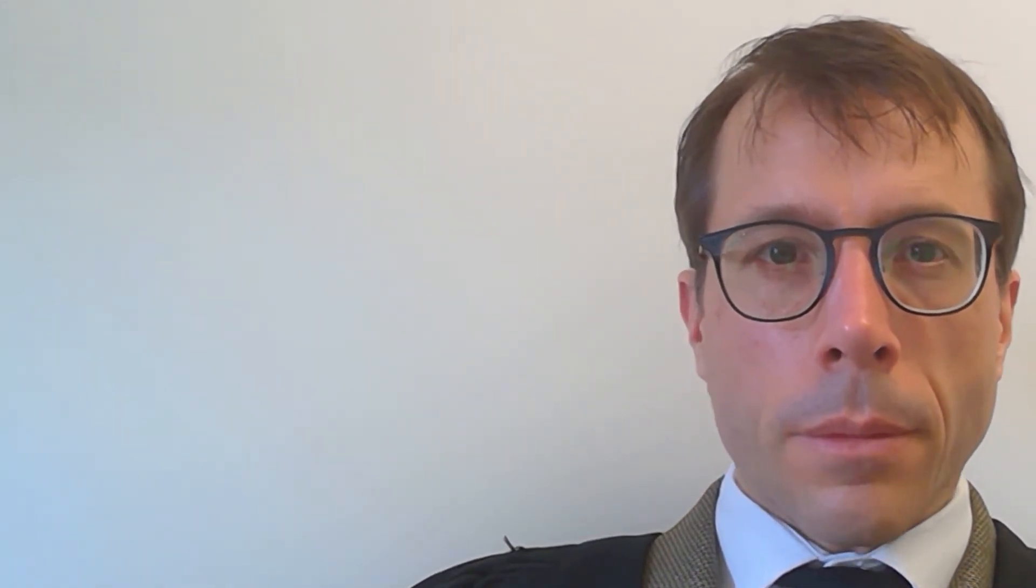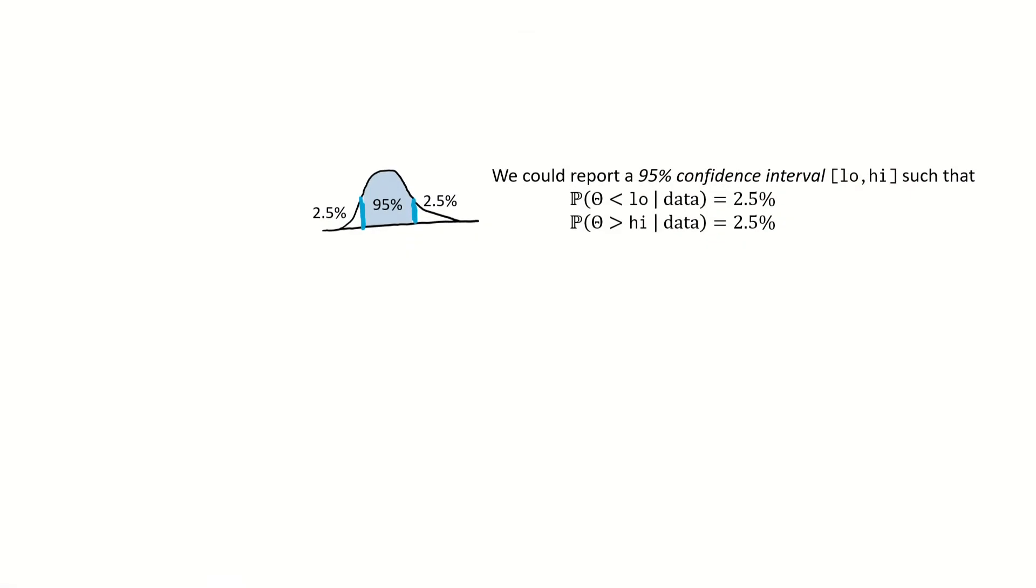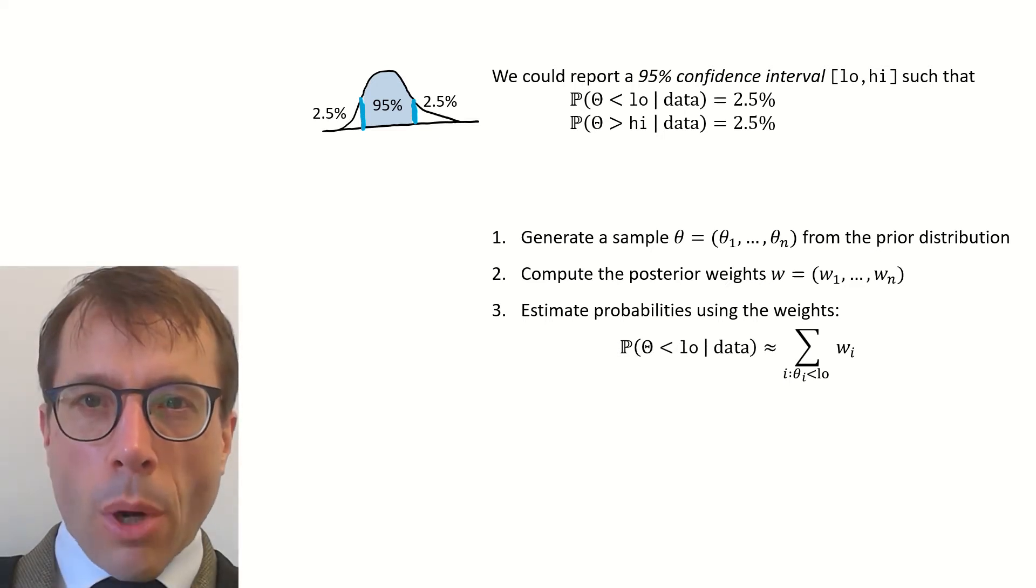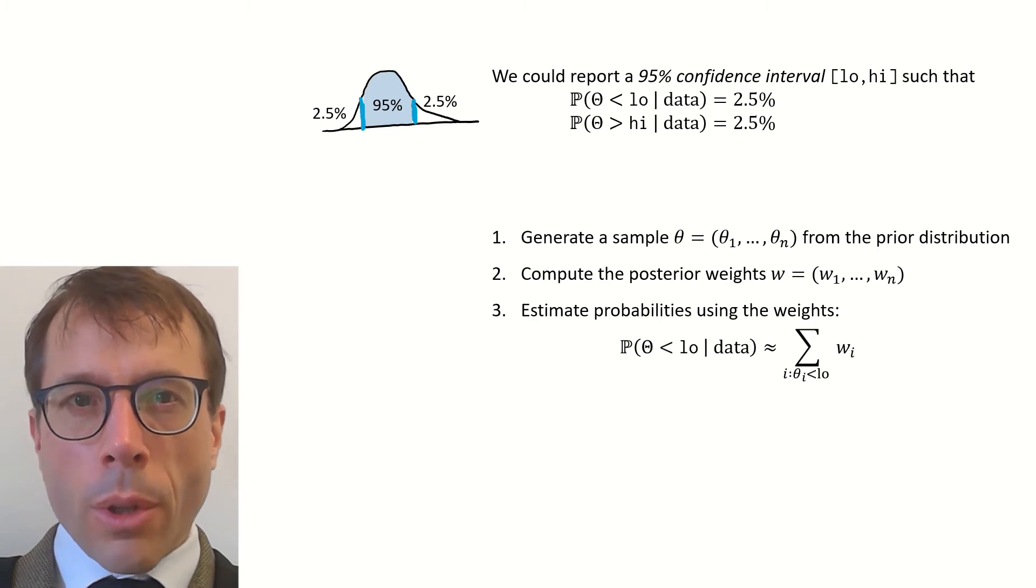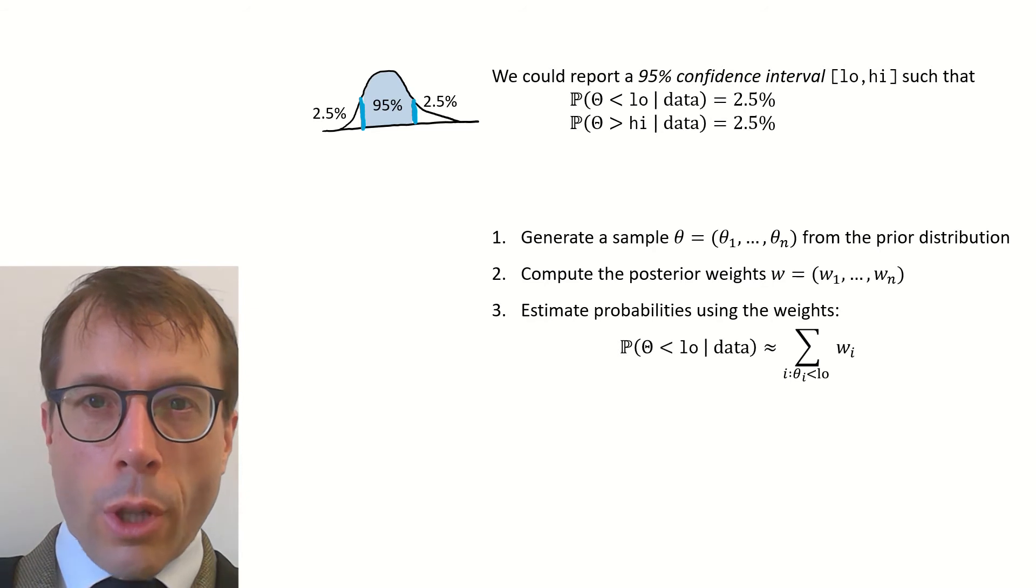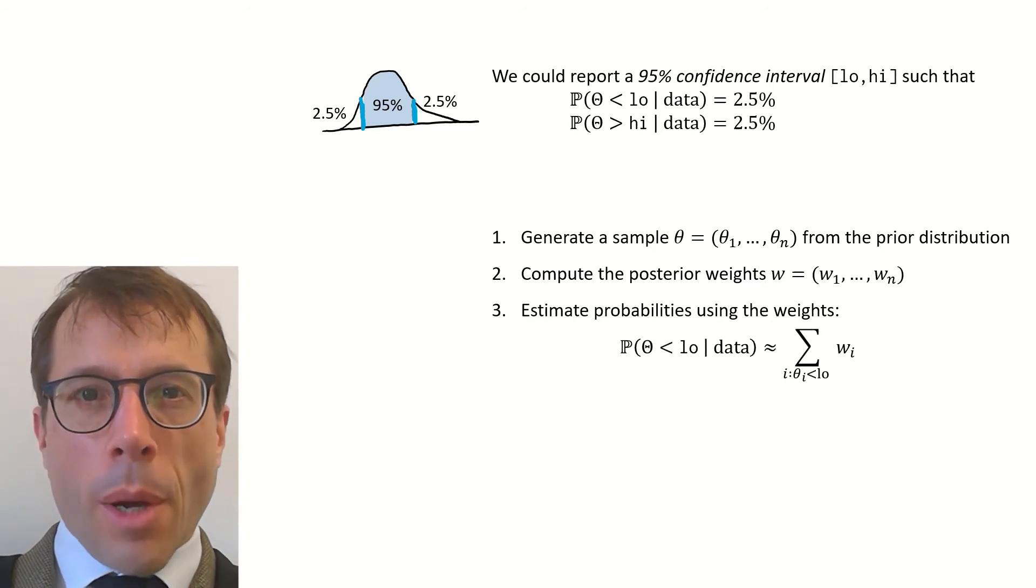Let me just say a little bit about how we can compute these confidence intervals in practice. Let's say we've done the computational Bayes thing, and we've got a sample of theta values and associated weights. These weights let us estimate posterior probabilities. For example, to find the conditional probability that theta is less than some threshold low conditioned on the data, to find that we just sum up the weights for all the sample values theta_i that are less than that threshold low.